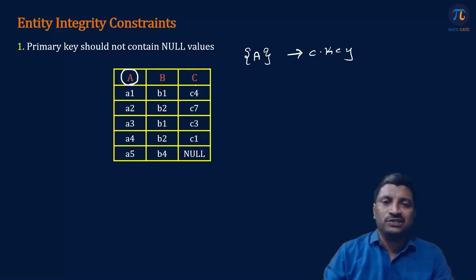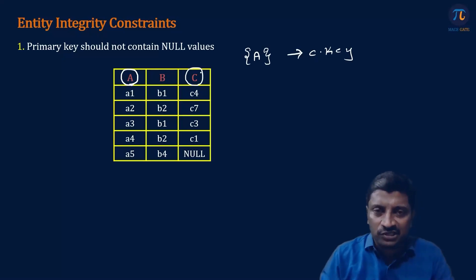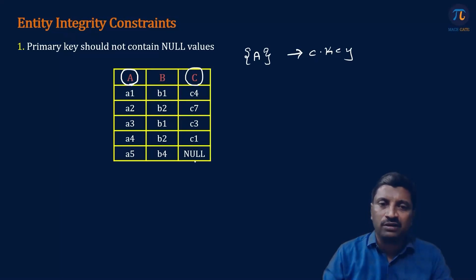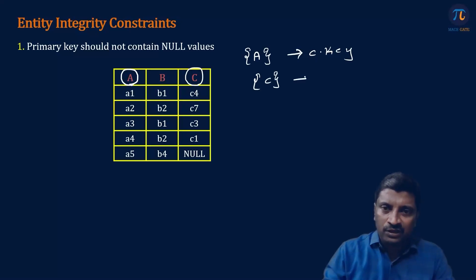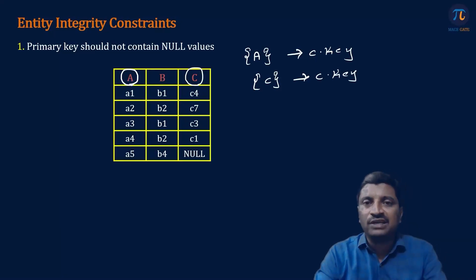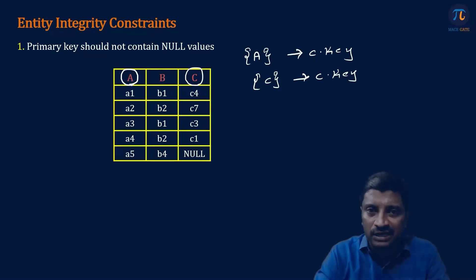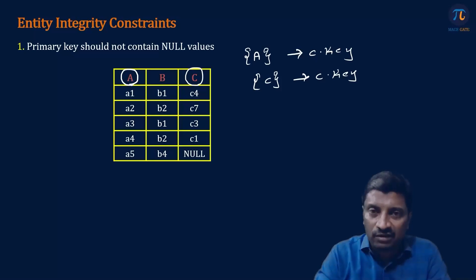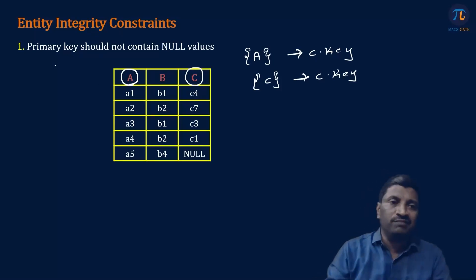So I can say the attribute set with A is a candidate key for this relation instance. Similarly, attribute C is also having distinct values for all the five records: C4, C7, C3, C1, null. So the attribute set with C is also an example of a candidate key. Now, according to the definition of primary key, we can select any one of the candidate keys as a primary key. But whenever the candidate key consists of null value, it should not be selected as a primary key. That is the meaning of this constraint.